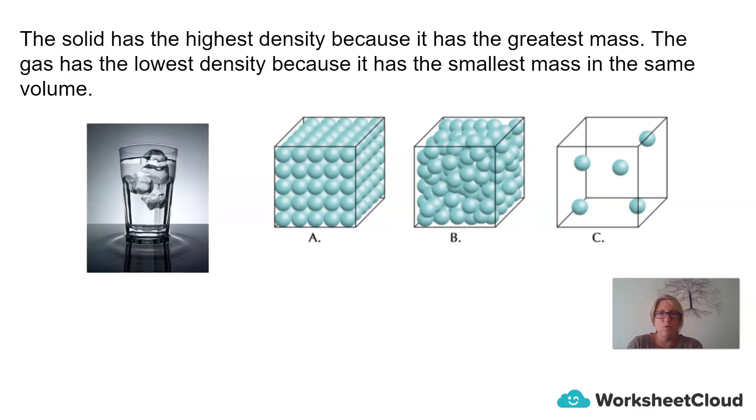Back to our glass of water. If the solid has the highest density, that means the liquid has a lower density. So how come do ice cubes float on the liquid? How come, in this case, the solid is lighter than the liquid, or the solid is less dense than the liquid? It must have to do with the arrangement of particles.